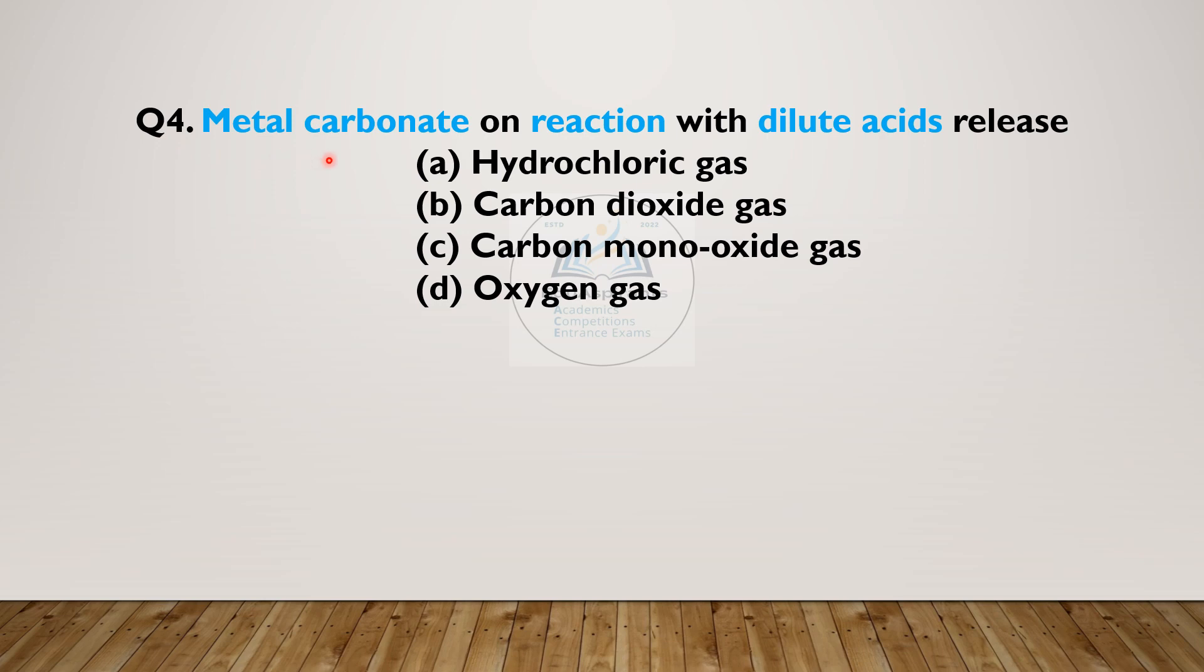Question 4. Metal carbonate on reaction with dilute acids release: A) chloric gas, B) carbon dioxide gas, C) carbon monoxide gas, or D) oxygen gas. Marked your choice? Let us confirm. The correct choice is B, carbon dioxide gas.